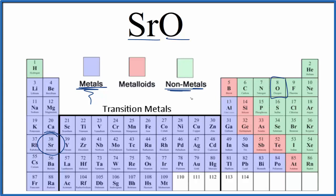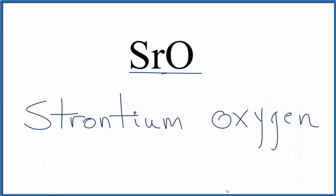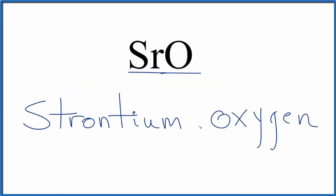So the way we name an ionic compound, we first write the name for strontium as it appears on the periodic table, like this. And then we write the name for oxygen. Note that it's a lowercase O for the oxygen.